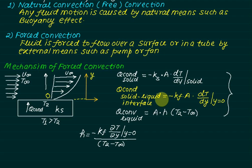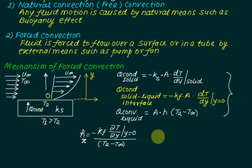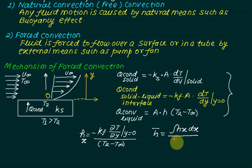Equating equation 2 and equation 3, we solve for h, and the area A cancels out. This gives: h = -K_fluid × (∂T/∂y) at y=0, divided by (T2 - T∞). The heat transfer coefficient h varies along the direction of flow. The mean or average convection heat transfer coefficient for a surface is determined by averaging the local heat transfer coefficient over the entire surface. The average value H-bar is obtained by integrating Hx with respect to dx from 0 to L, divided by the integral of dx from 0 to L.